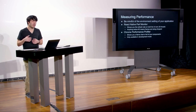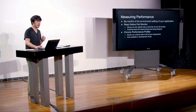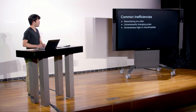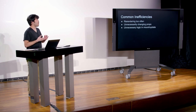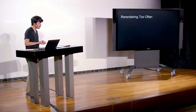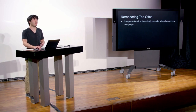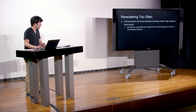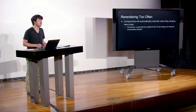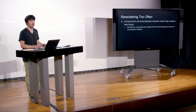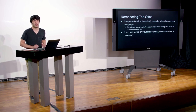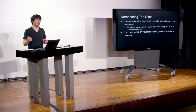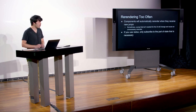Now that we've seen how to measure app performance, let's start optimizing. Common inefficiencies in React Native apps are: re-rendering way too often, unnecessarily changing props, and unnecessary logic in mount or update. Components automatically re-render whenever they receive new props. Sometimes a prop that isn't needed gets passed, and when that prop changes, it forces the entire component to re-render unnecessarily. If using Redux, only subscribe to the part of state you actually care about — in your mapStateToProps function, don't subscribe to props that aren't necessary.